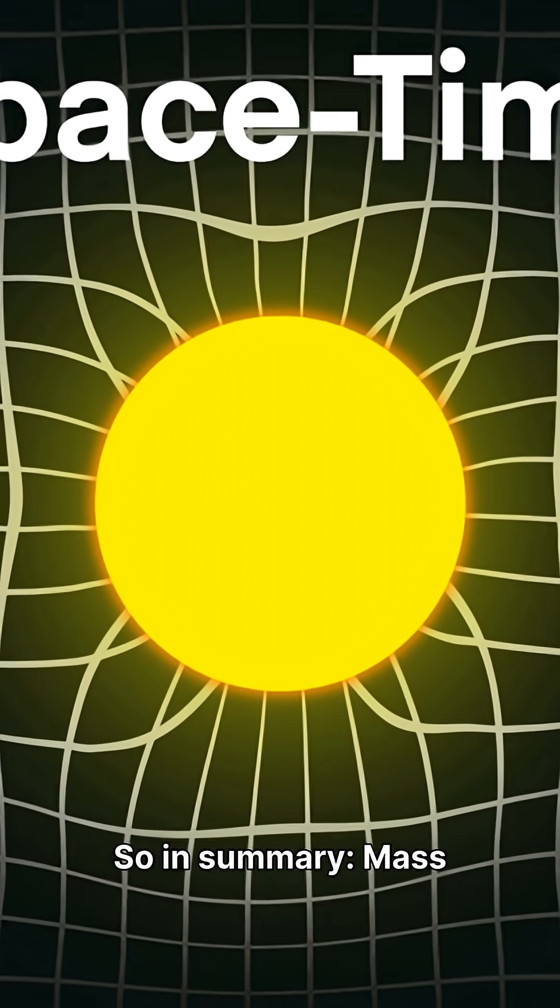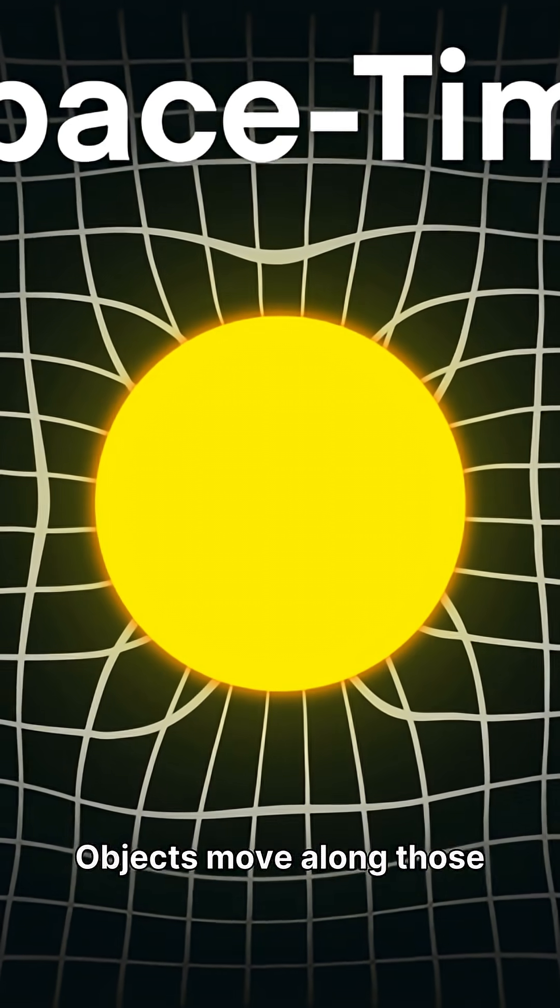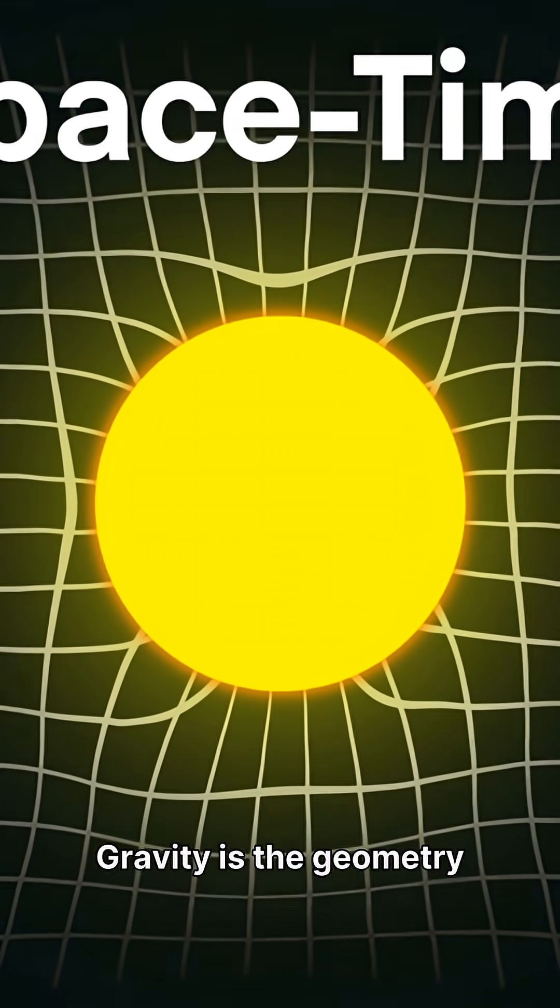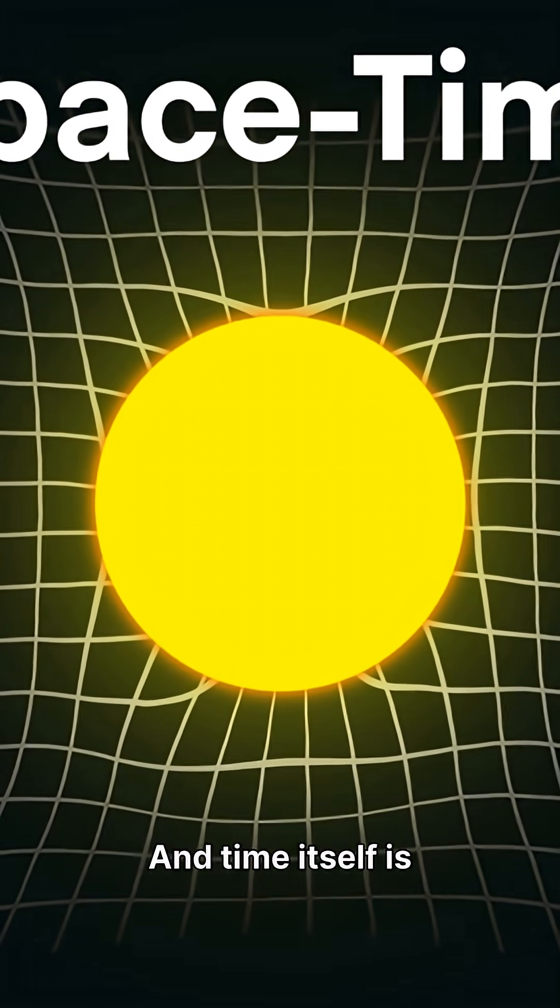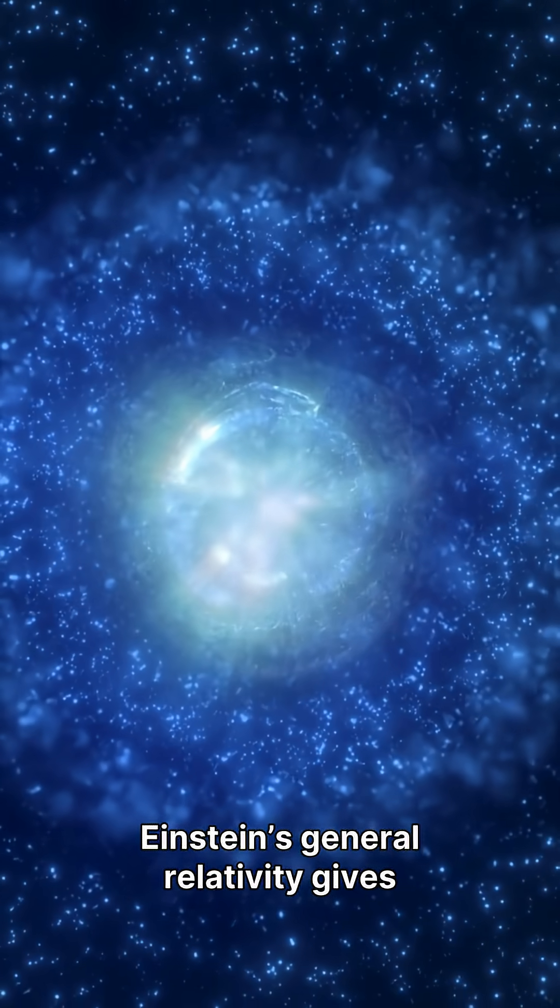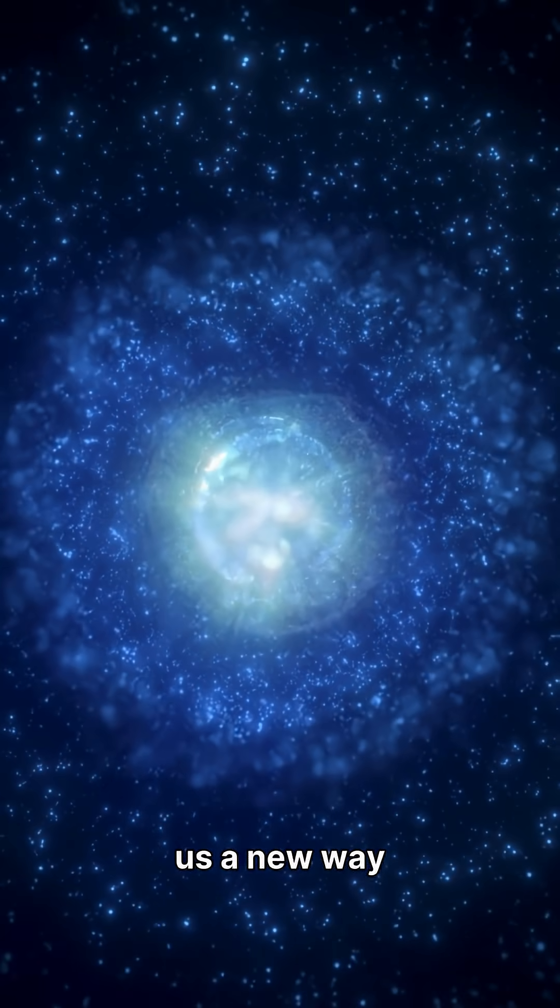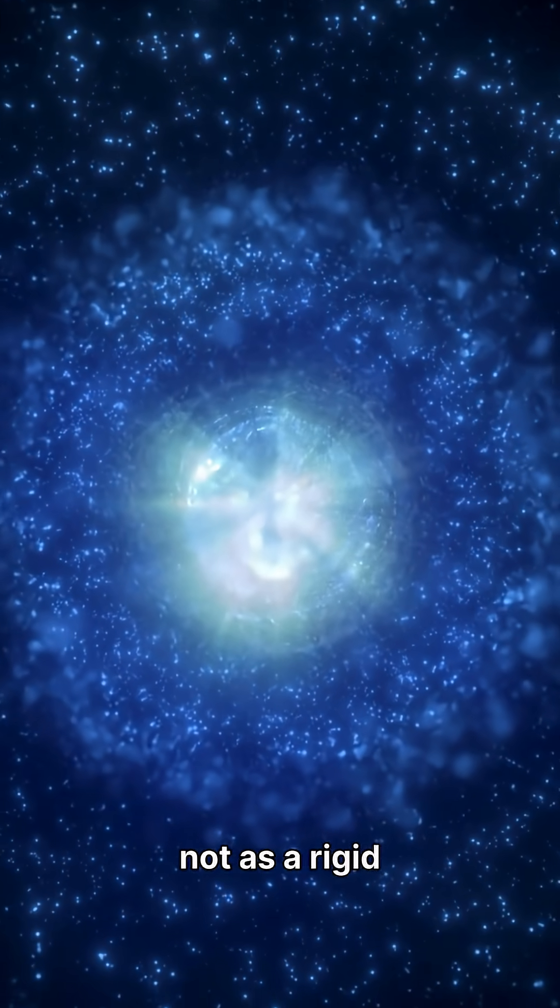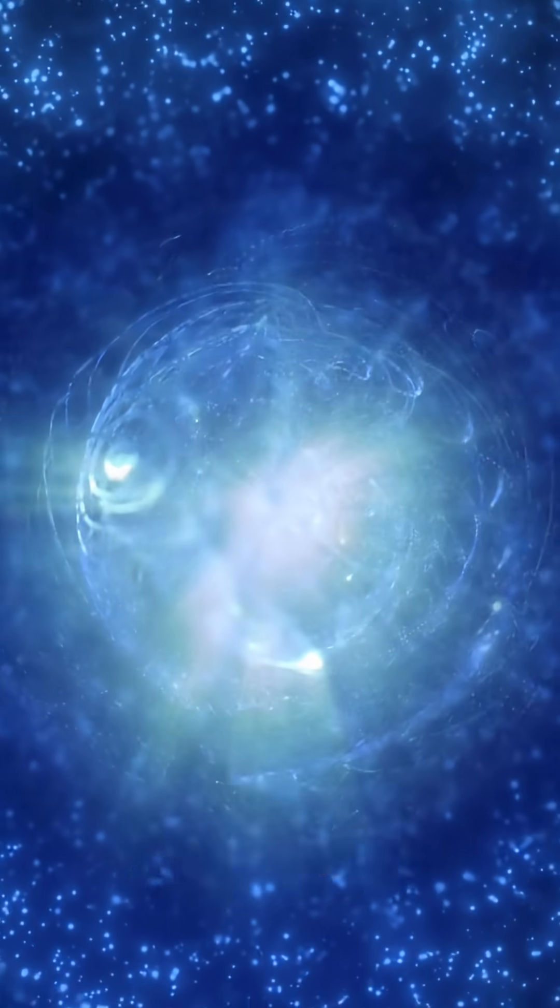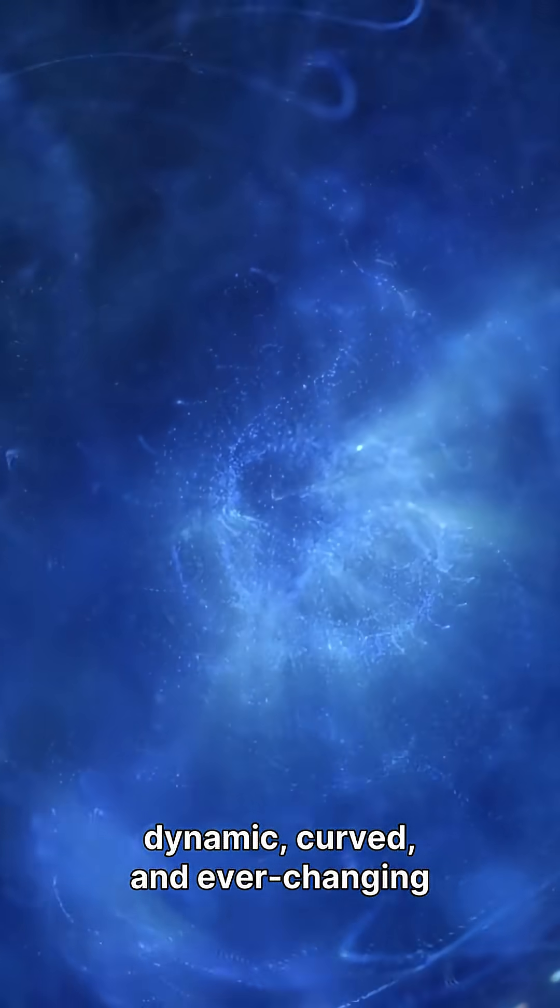So in summary, mass bends spacetime. Objects move along those curves. Gravity is the geometry of the universe, and time itself is flexible. Einstein's general relativity gives us a new way of seeing reality, not as a rigid stage, but as a dynamic, curved, and ever-changing fabric.